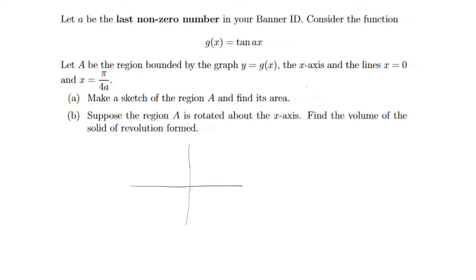So tangent of ax — in general, tan(x) has vertical asymptotes at π/2 and −π/2. At π/4 it's going to be 1. At 0 it's 0. At −π/4 it's −1. So it's going to look something like this.